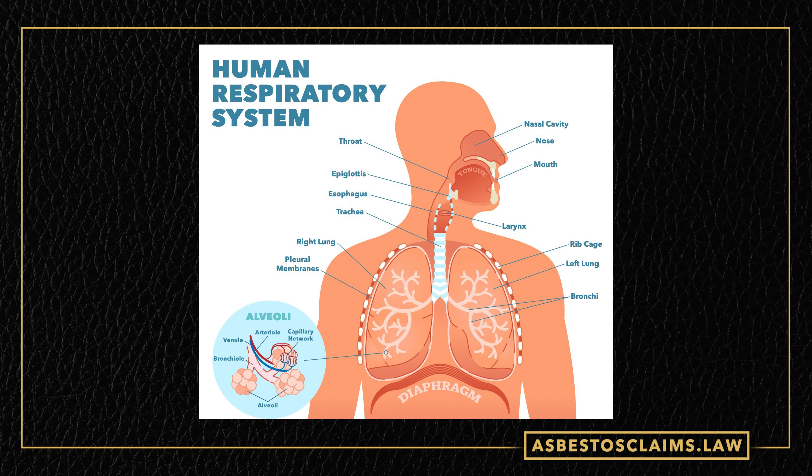Now, let's look a little bit at the human respiratory system as we talk about the health risks asbestos can cause and what it does. This diagram here shows how people breathe in through their nose and down through their throat into their lungs. We have a diagram of the lungs and over on the left, it kind of zooms in on the alveoli where a lot of the gas exchange processes happen and breathing happens.